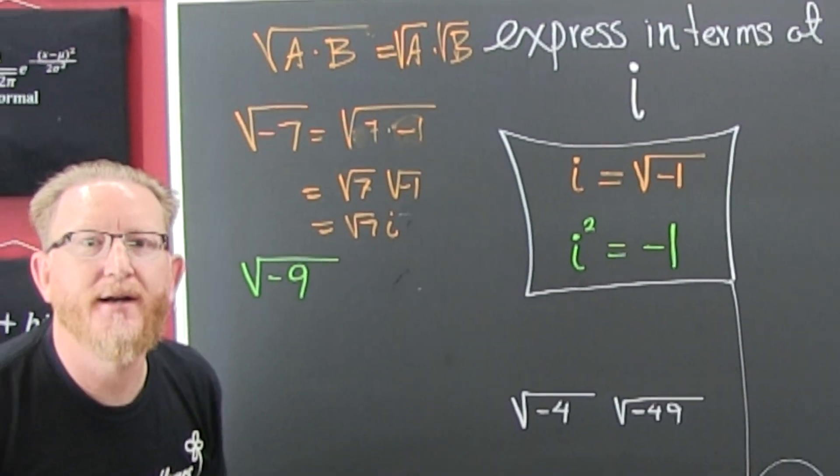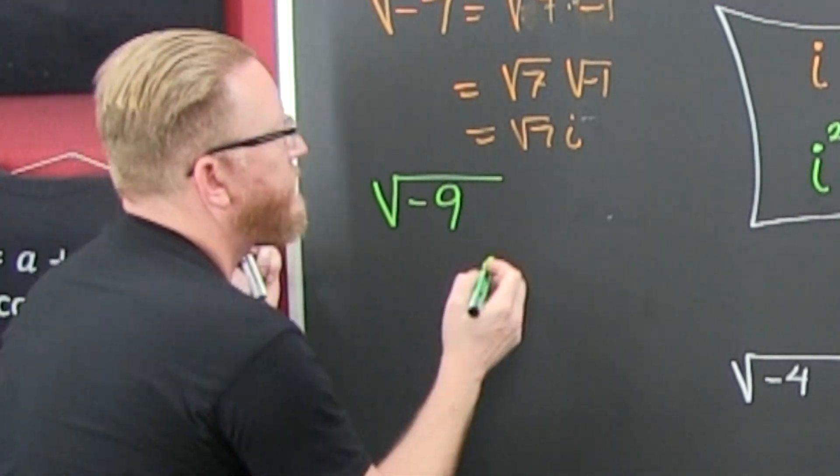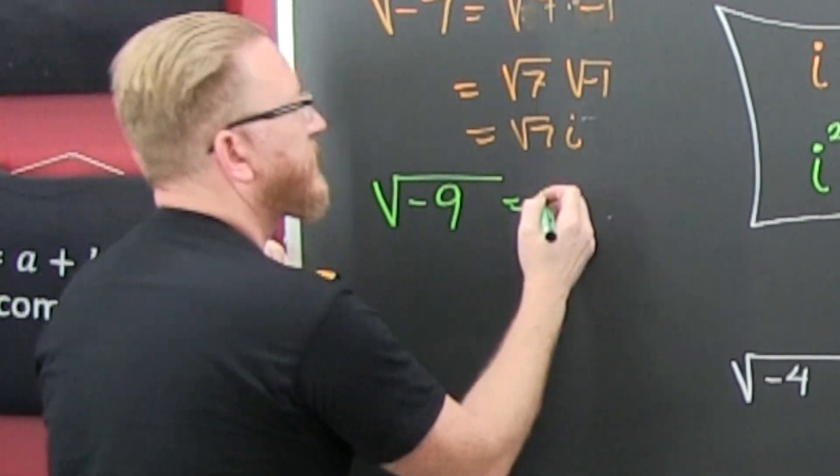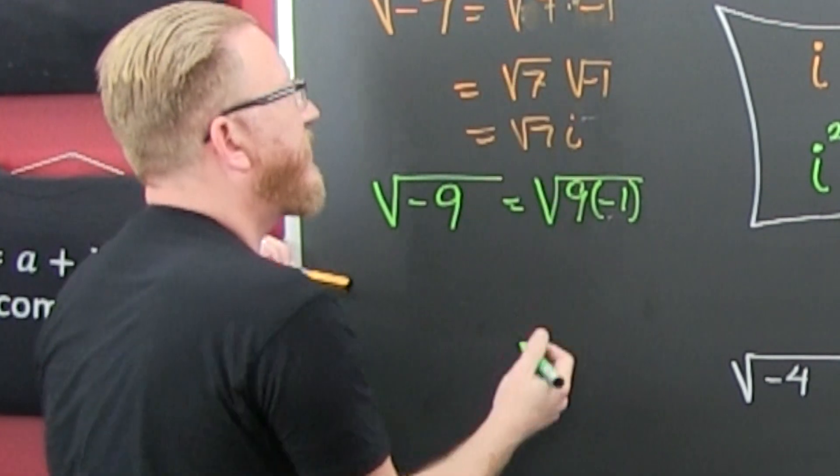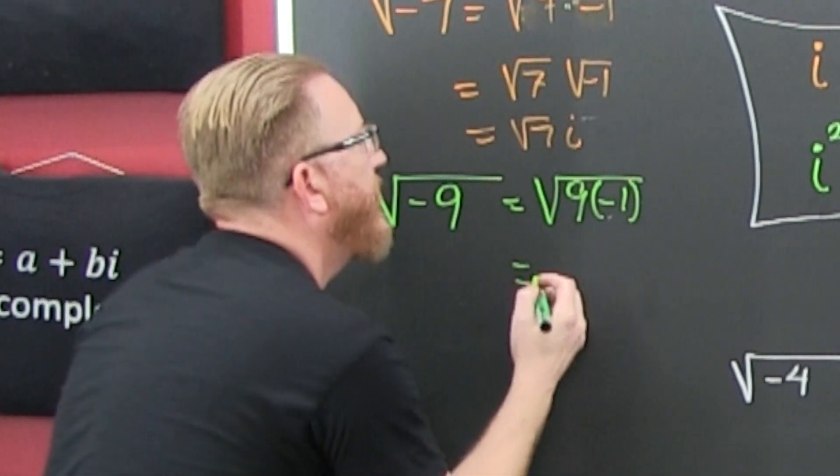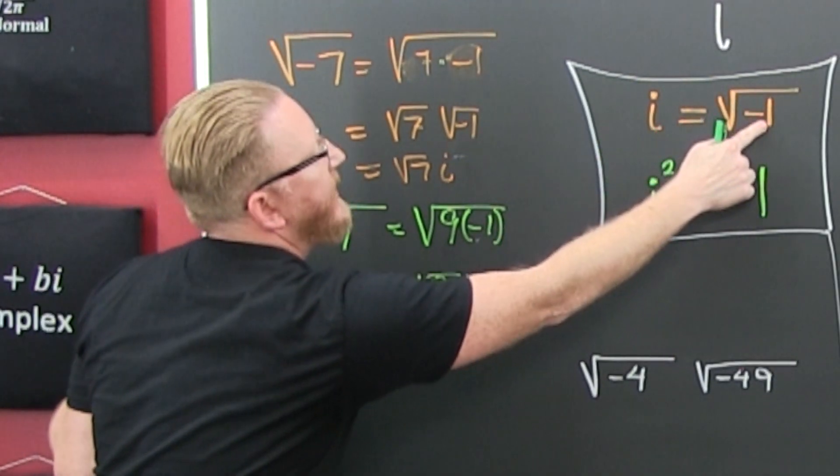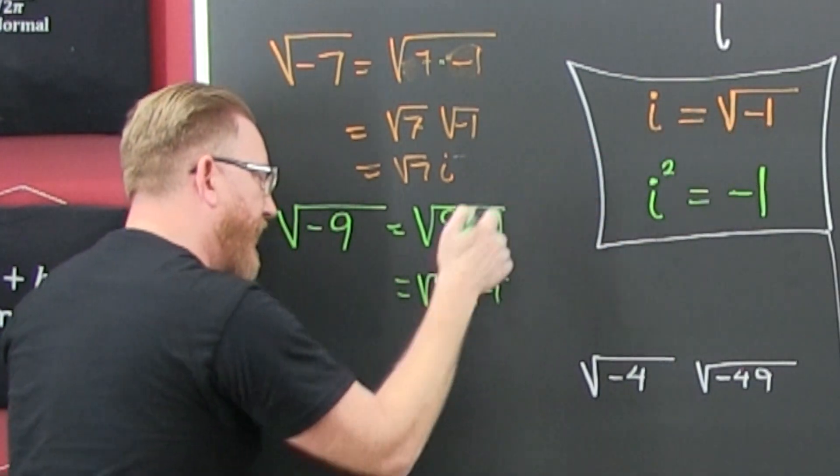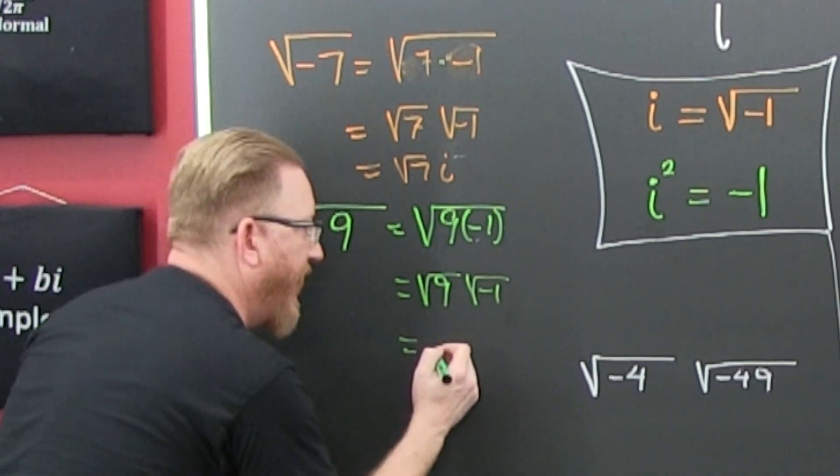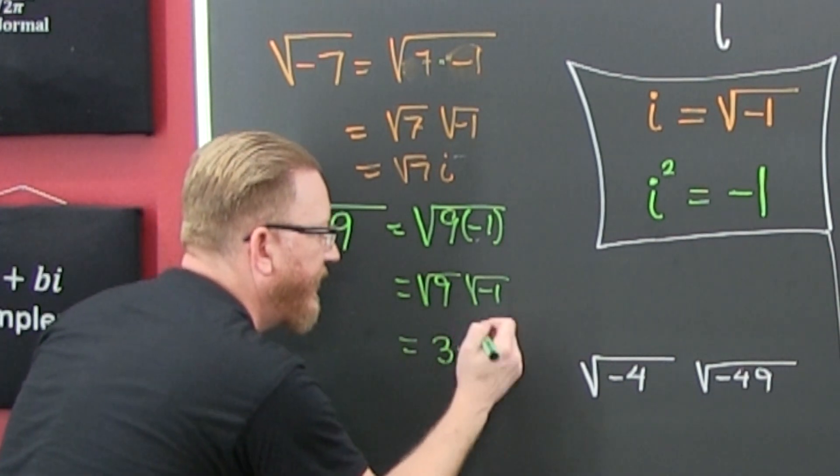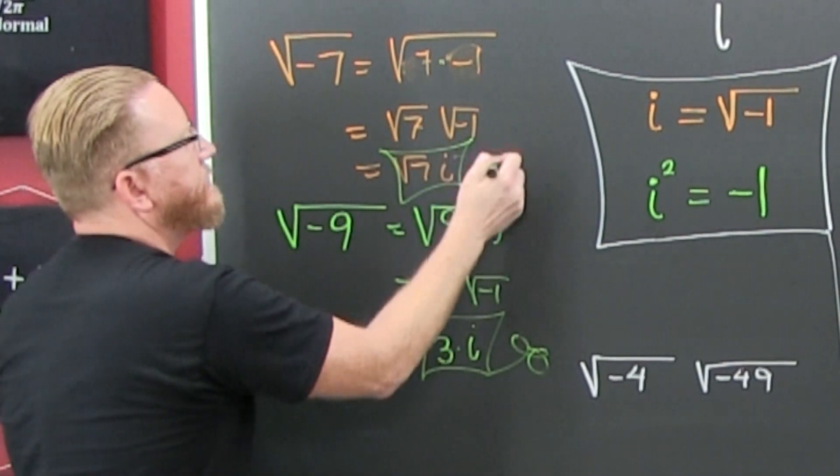Let's get another one. I'm going to do like that last problem and split that up as a product of 9 and minus 1. I write it the square root of 9 times the square root of minus 1. But the square root of minus 1 is defined to be i. The square root of 9 is 3 times i.